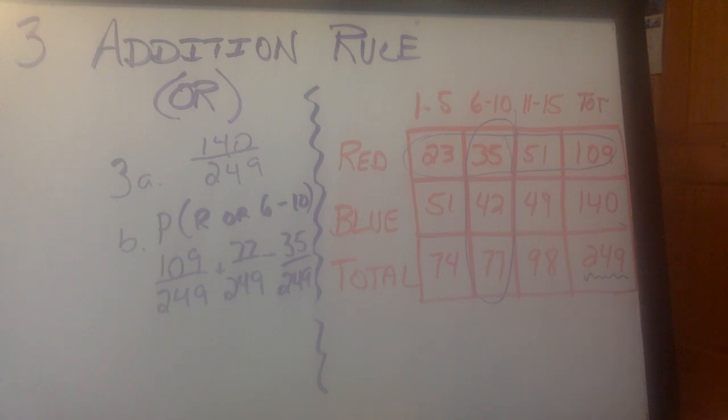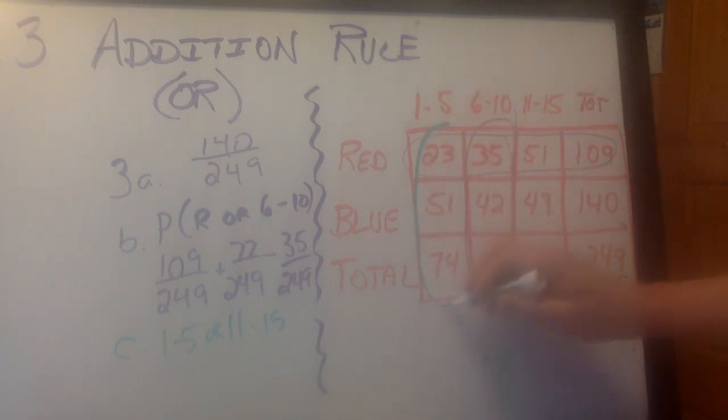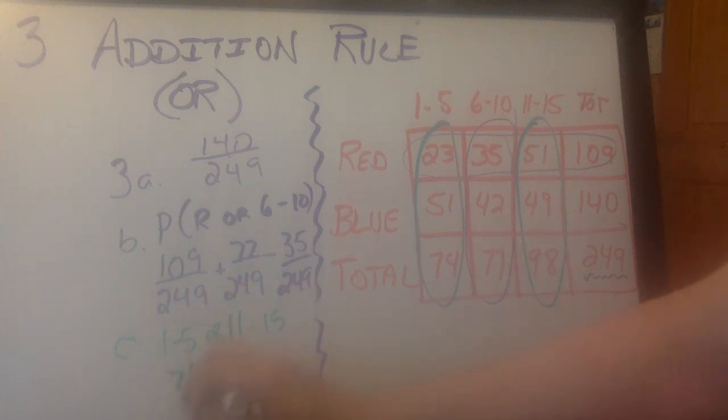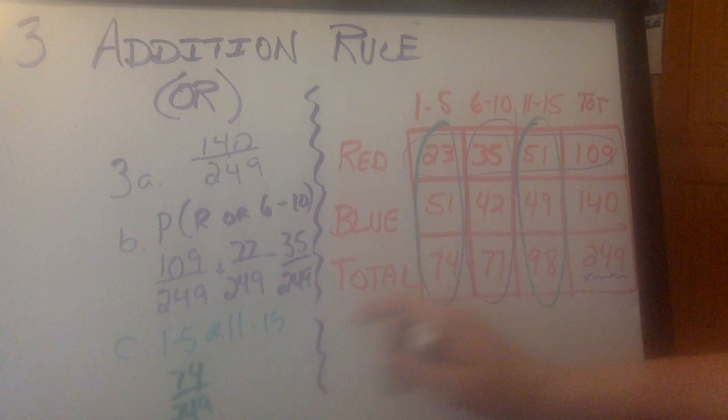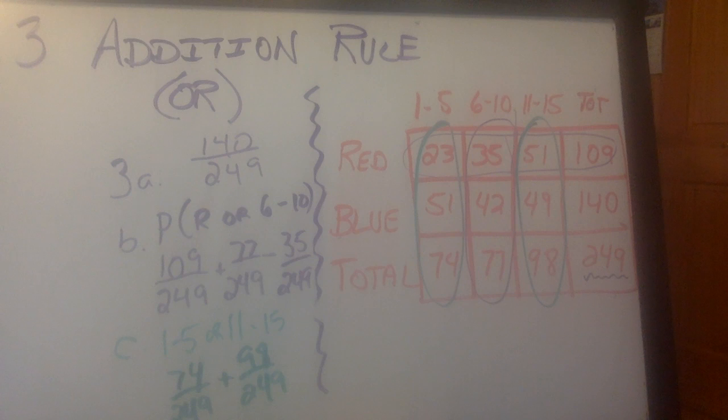Part C says, what about picking somebody from 1 to 5 or 11 to 15? 1 to 5 is this group. 11 to 15 is this group. Do they overlap? The answer is no. So that's 74 out of 249 plus 98 out of 249. But there is no overlap, so I do not have to subtract.